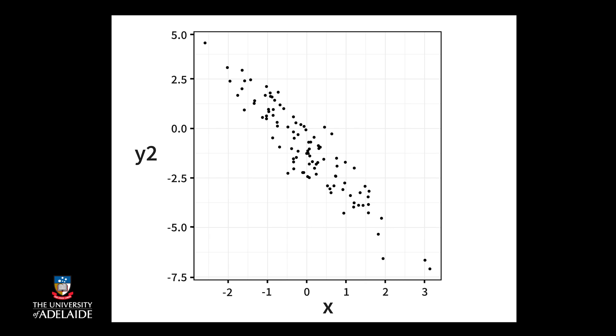The next scatter plot has a negative direction, because the points decrease when we go from left to right.